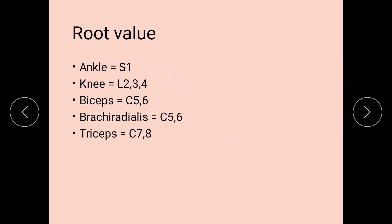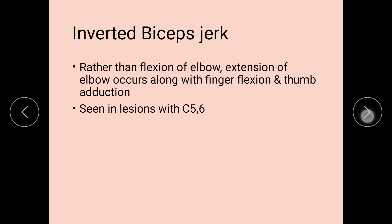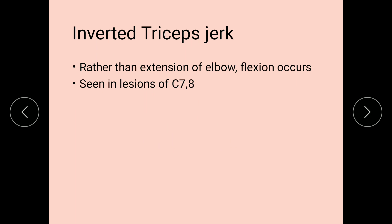Remember the root value: whenever there is a lesion at C5 and C6, the biceps reflex gets inverted. Inverted triceps jerk: rather than elbow extension, flexion occurs. This is seen in lesions of the spinal segments C7 and C8.